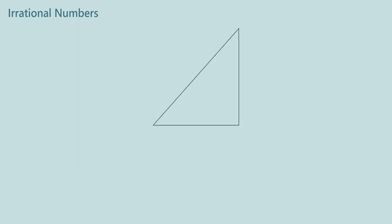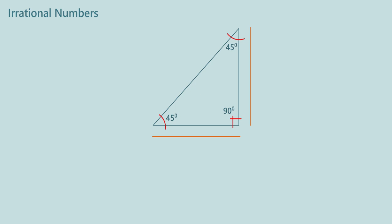Now let us take the next triangle. This is a 45-45-90 degree triangle. What is special about this right angle triangle? It has two equal sides, so it is an isosceles right angle triangle. Let's say the two equal sides are of length 1 unit each. Then by using Pythagoras theorem, the diagonal is equal to square root of 2. Let us find out the value of square root of 2 so that we will be able to represent it on the number line.